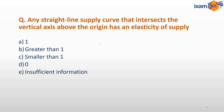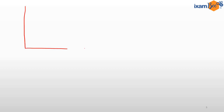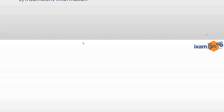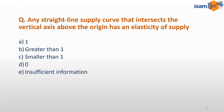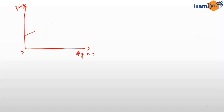In order to solve such questions, let's look at the diagram of the supply curve. On the vertical axis we plot prices; on the horizontal axis we plot quantity supplied. The supply curve intersects the vertical axis above the origin. We need to find out the elasticity of such a curve.